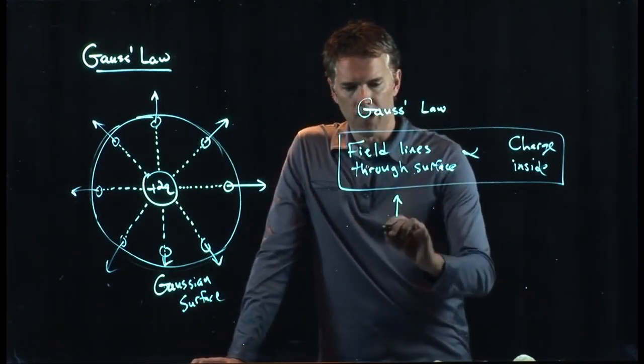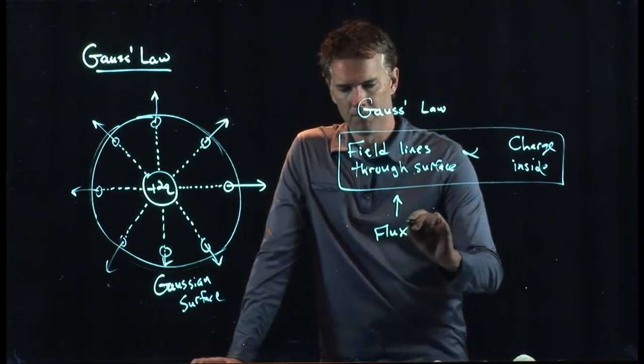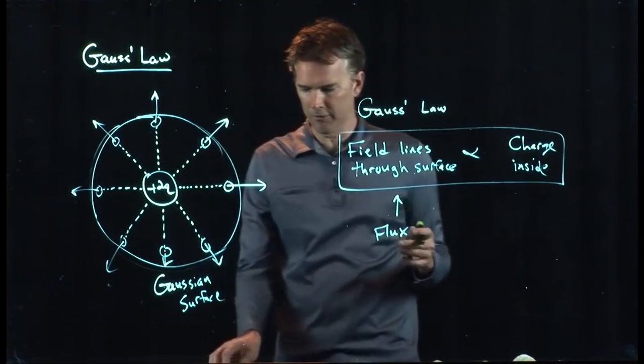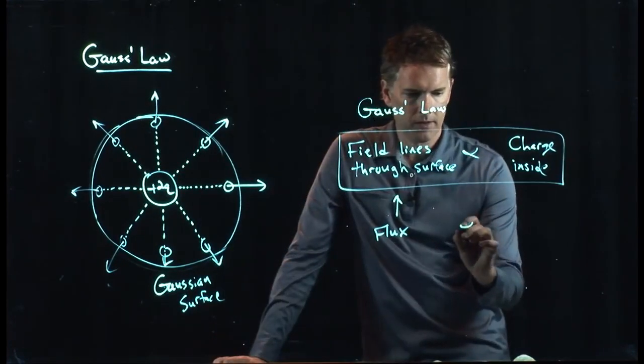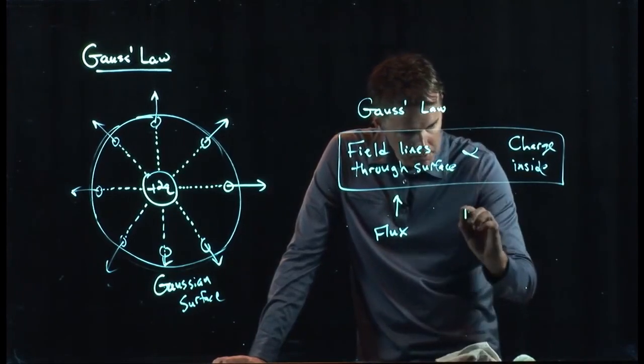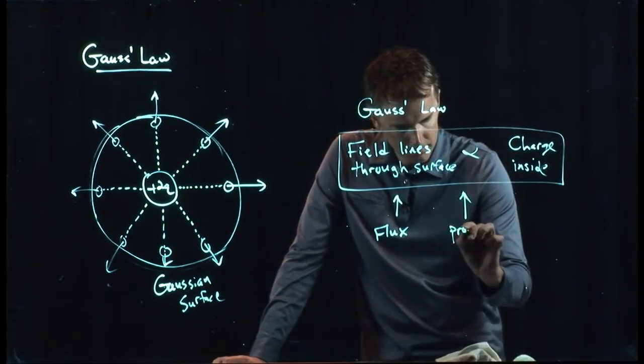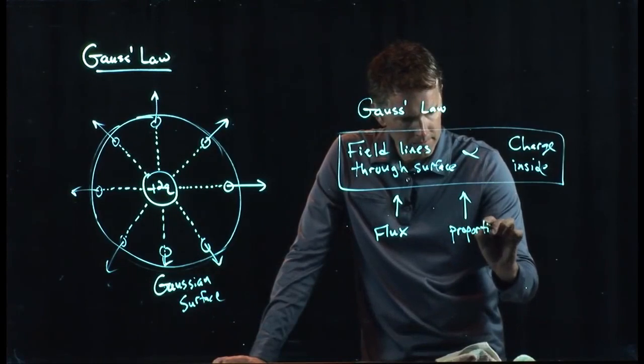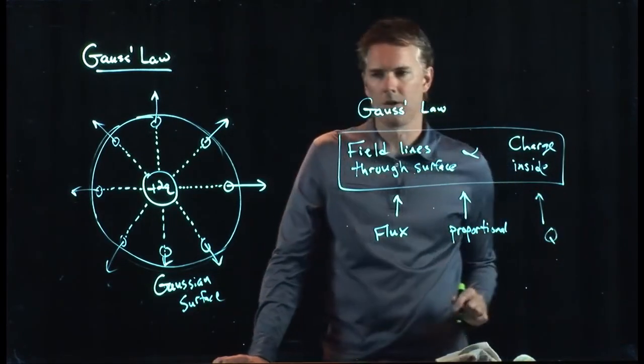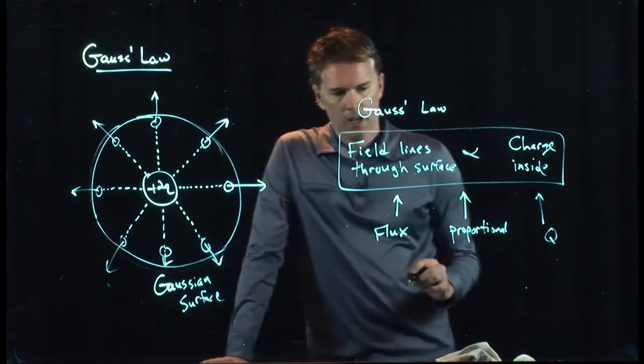This right here is called the flux. What's the flux? How many field lines are coming out of the surface? This is proportional, right? That's what that little alpha means. It means proportional. That's, of course, our charge q.